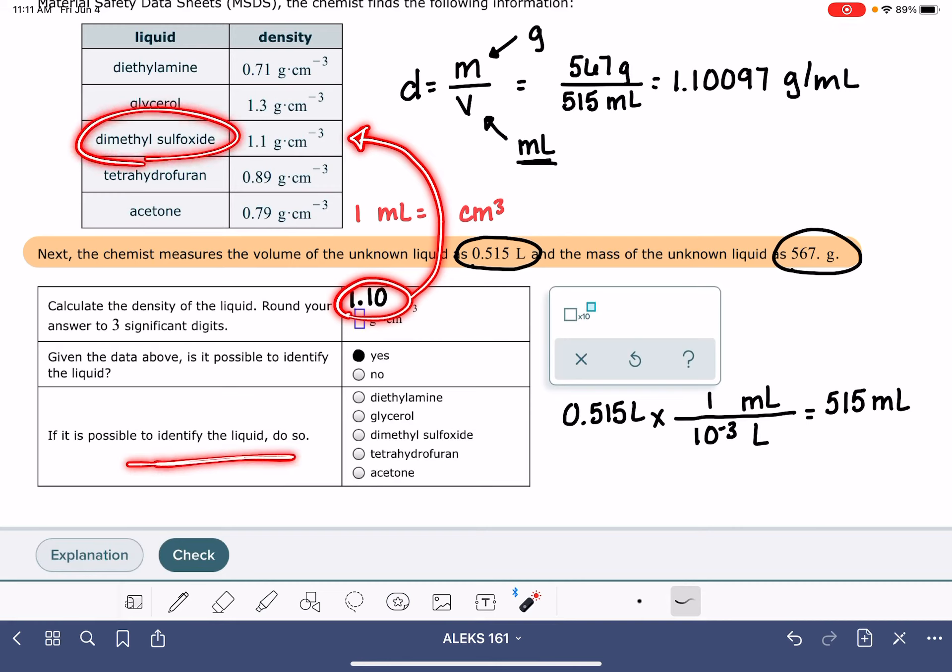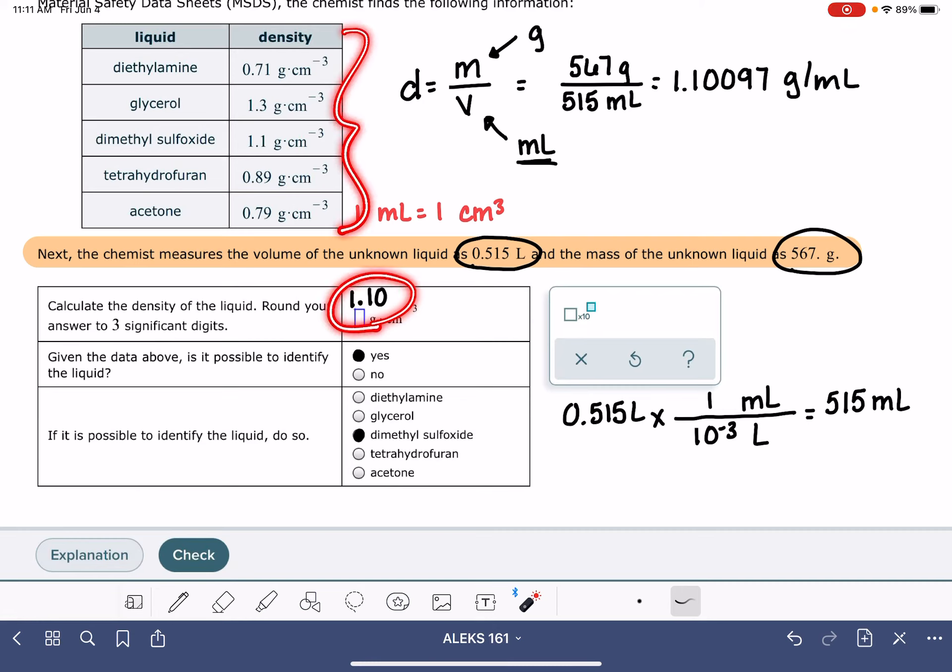When you're doing this problem, if you get a number here that does not match up with anything in the data table, the first thing you should do is just check your math. Make sure that you did your math correctly. Double check it, maybe triple check it. Make sure you did your milliliter to liter conversion correctly. And if you're confident that you've calculated your density right and it doesn't match up with anything in the table, then you would answer no.